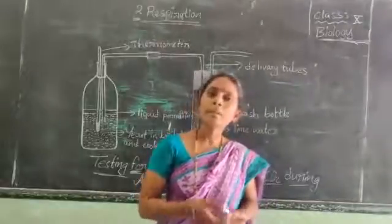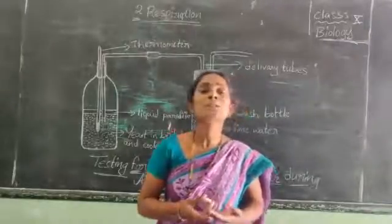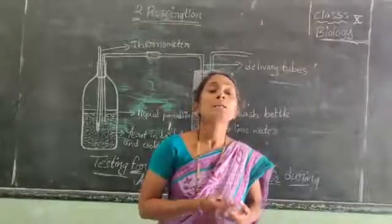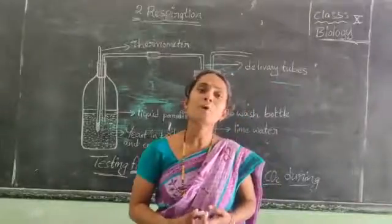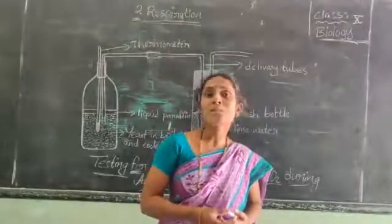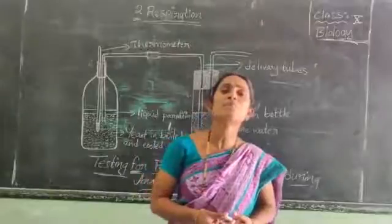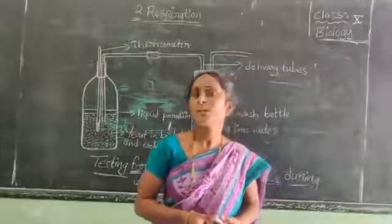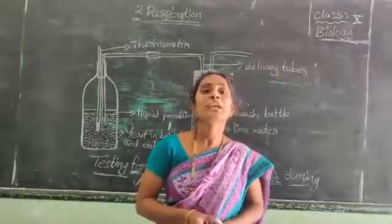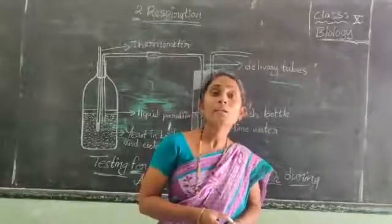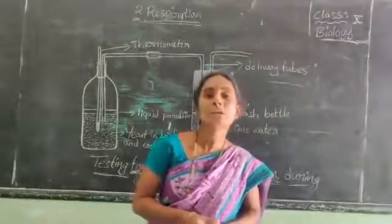When this pyruvate is oxidized, here two conditions are involved. What are those? One is in the presence of oxygen and the second one is in the absence of oxygen. The presence of oxygen we call aerobic respiration and the absence of oxygen we call anaerobic respiration. I already explained that anaerobic respiration takes place in bacteria and yeast cells.